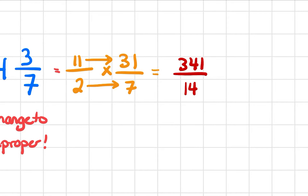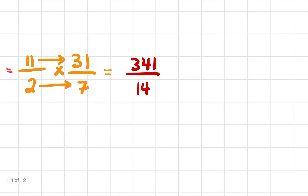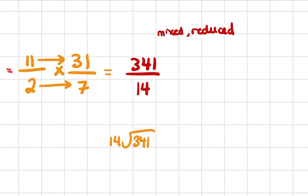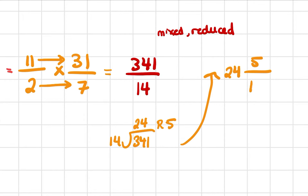Although 341 over 14 is fine as an answer, we do want it to be mixed and reduced as our final answer. So we'll do some quick division: how many times does 14 go into 341? It actually goes in 24 times with a remainder of 5. So my whole number is 24, my remainder becomes my numerator, and my denominator is still 14. The fraction 5 over 14 is already reduced, so this is my final answer: 24 and 5 over 14.